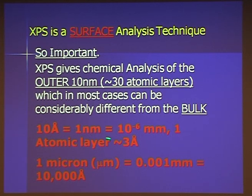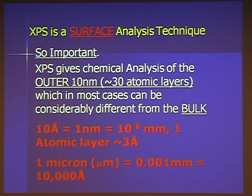Using 10 Angstroms equals 1 nanometer, we look at about 10 nanometers, about 100 Angstroms. This is quite different from the X-ray techniques of the microscope where we're looking at 1 to 5 microns down.